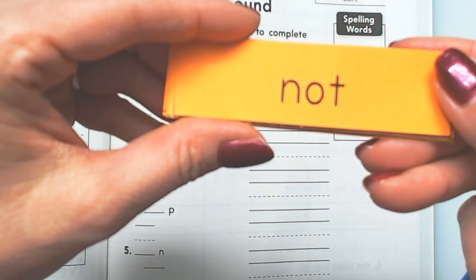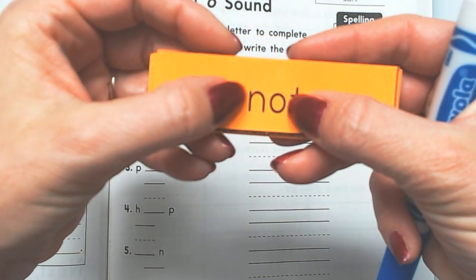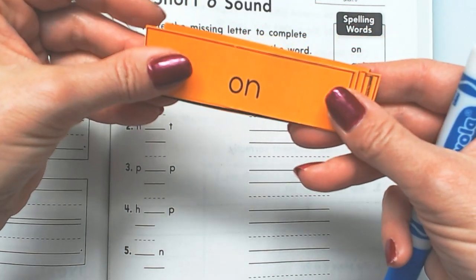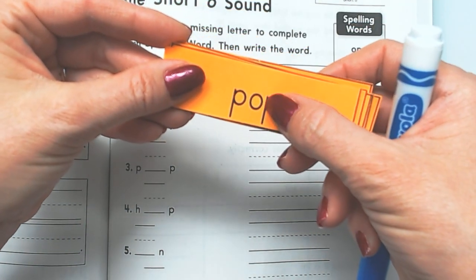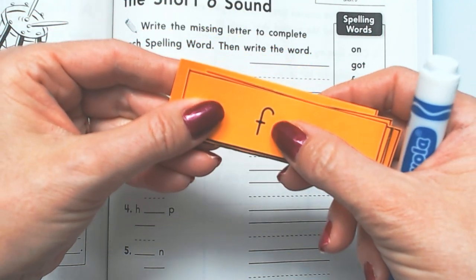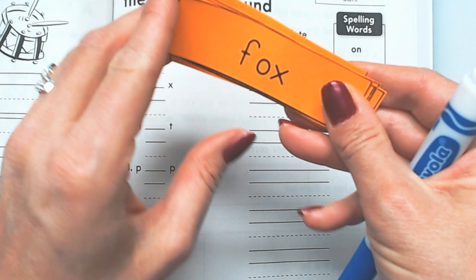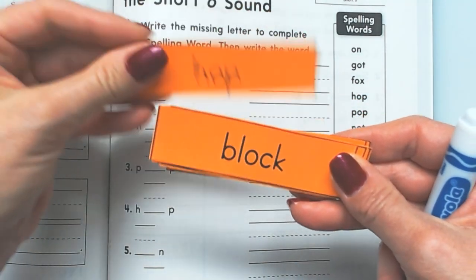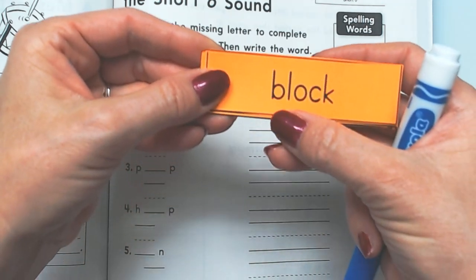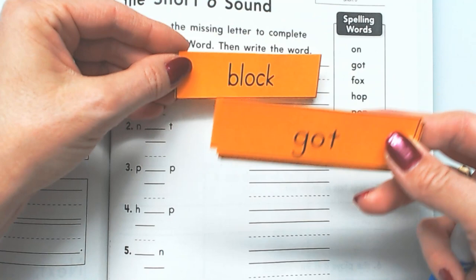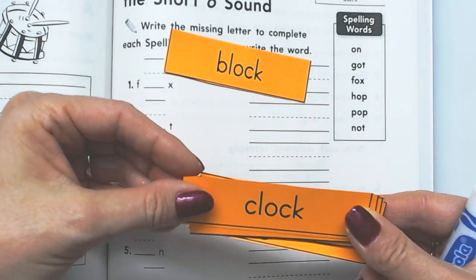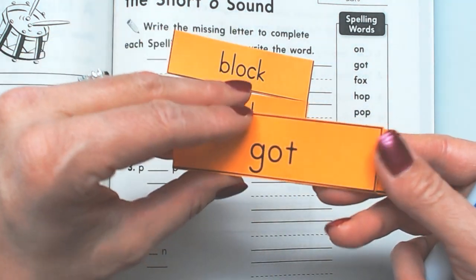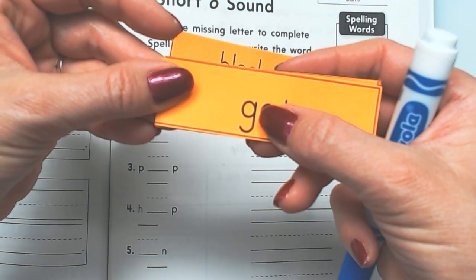Okay, this says not. Remember they all have an O in them, all of them this week. Not. And O says ah, right? On. Pop. Fox. Hop. And then we have our two challenge words: block and whoops, looks like clock got out of order. Clock and block. Clock and block are our two challenge words. And then this one that we have to write is G-O-T, got.